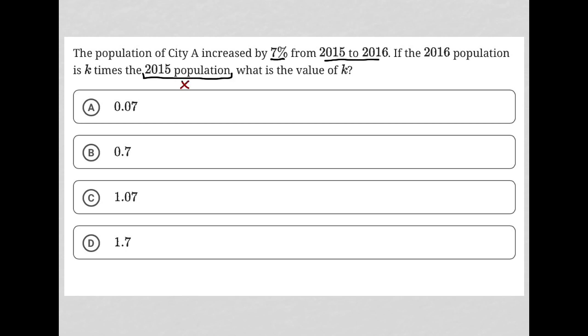I know that I multiply X times K to get the 2016 population. But I also know that the city's population increased by 7% from 2015 to 2016.